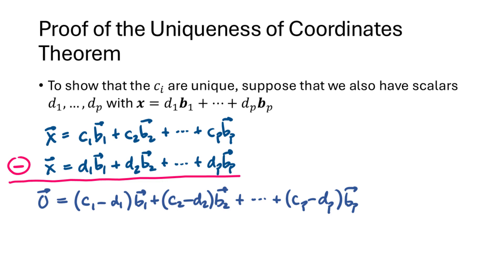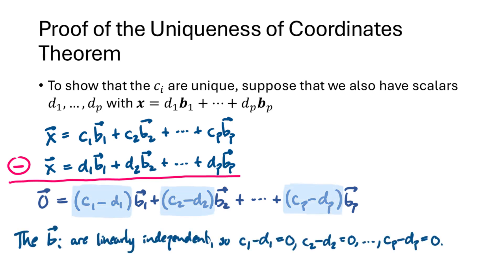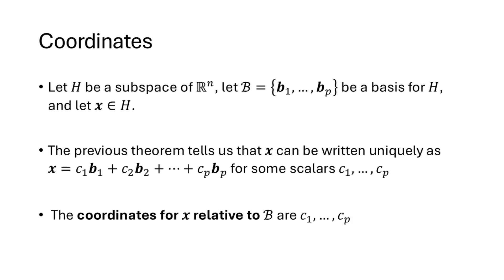This gives us a linear combination of the b vectors that equals the zero vector. But the b vectors are linearly independent, so by the definition of linear independence, any linear combination equaling the zero vector must have zero weights. So c1 minus d1 equals zero, c2 minus d2 equals zero, and so on. Adding d1 to both sides gives c1 equals d1, c2 equals d2, and so on. The c's equal the d's — that proves uniqueness, meaning coordinates are unique.